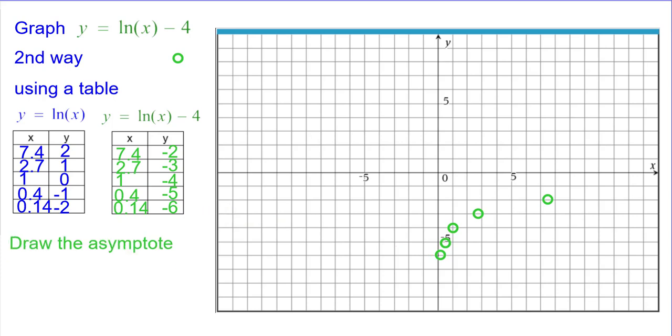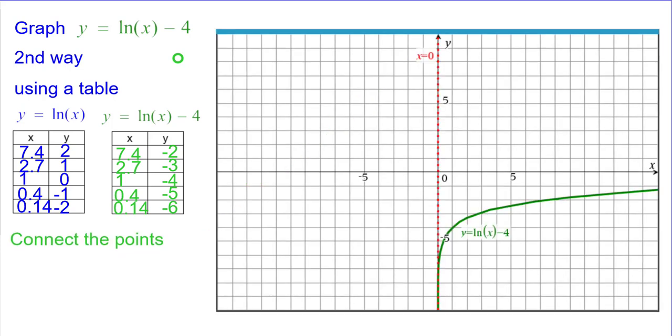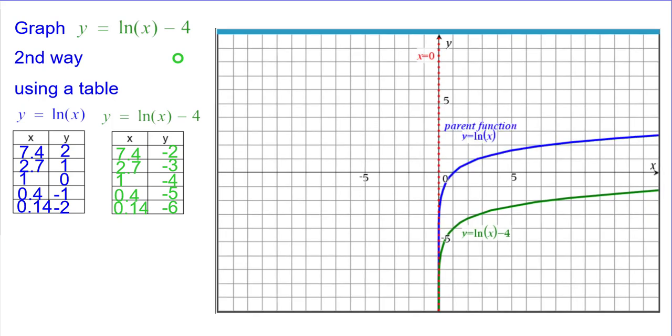We'll go ahead and draw in the asymptote, the vertical asymptote at x equals 0. And then we'll connect the points to make the natural log looking curve. Let's compare that to the parent function.